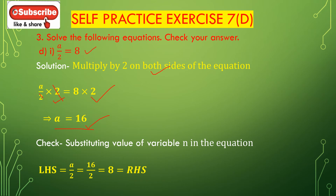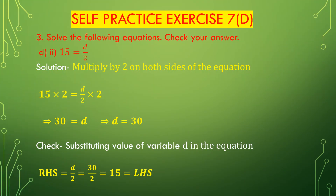Now we check a = 16 by substituting it in the equation. Left hand side: a/2 = 16/2 = 8, which is equal to the right hand side. So LHS = RHS and a = 16 is confirmed. Now we solve question number 2d.